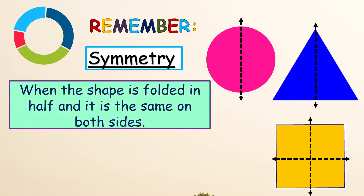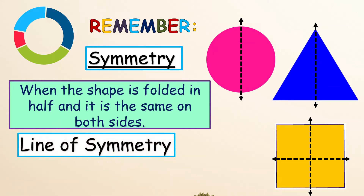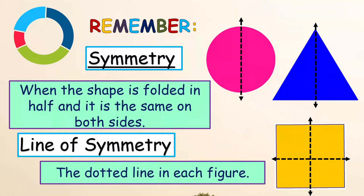When the shape is folded in half and it is the same on both sides — if you divide the shape and then connect the parts, putting one on top of the other, they have the same on both sides. The dotted line that we use in each figure is what we call the line of symmetry.